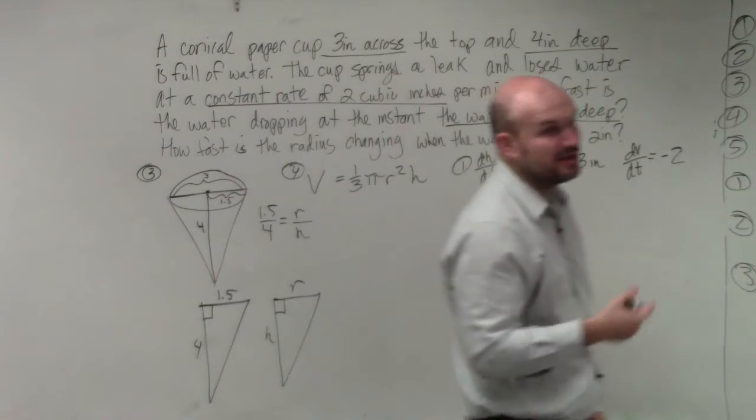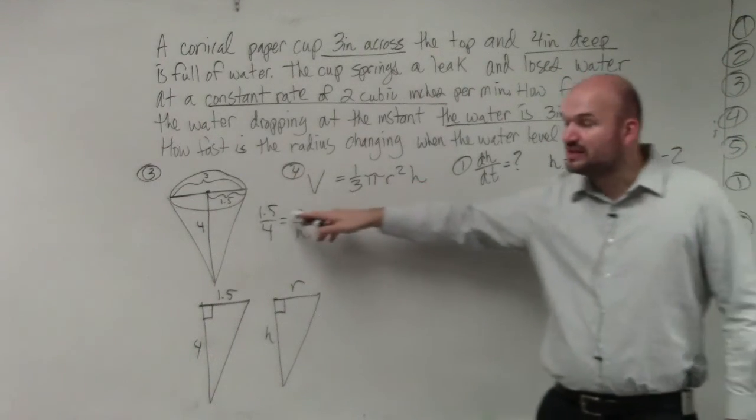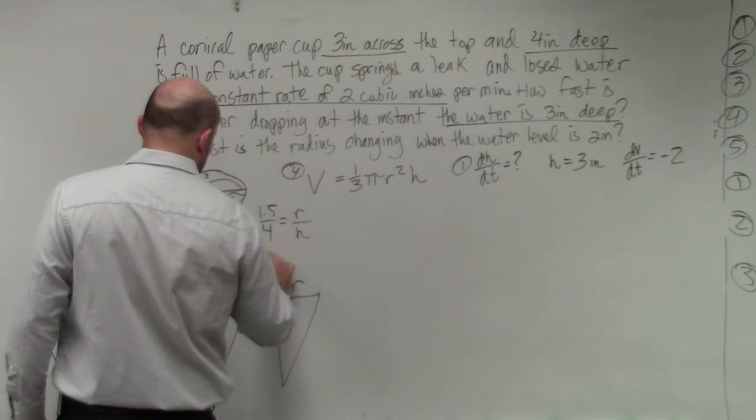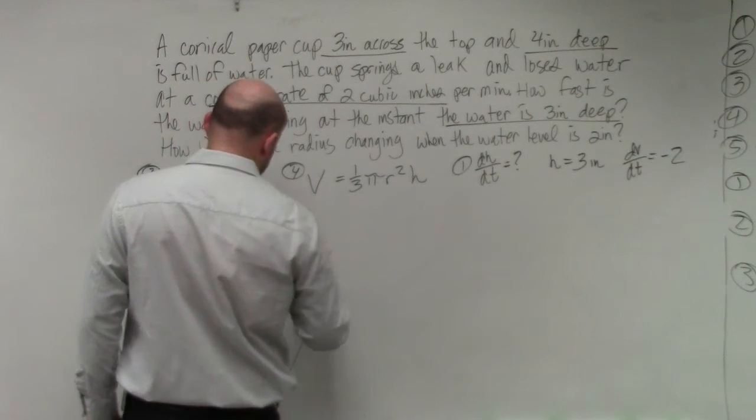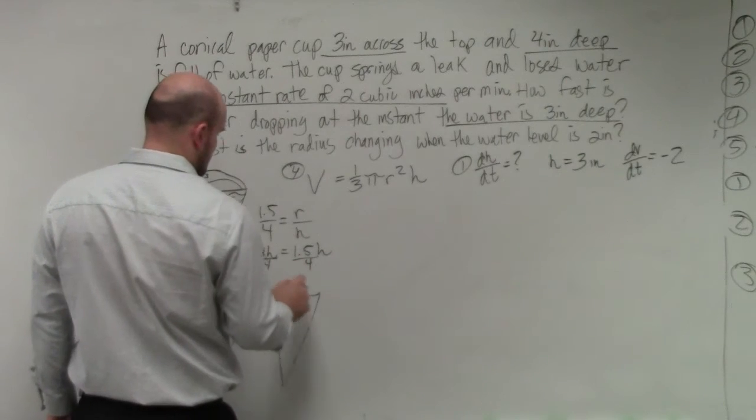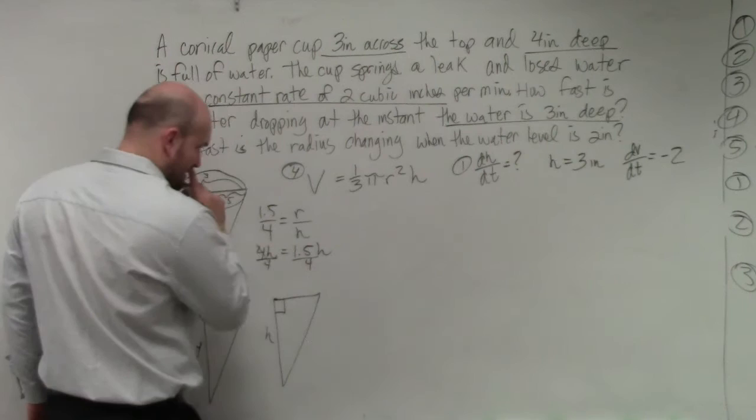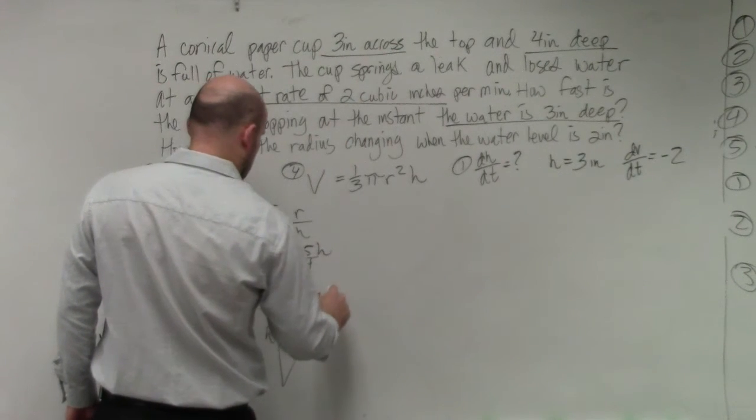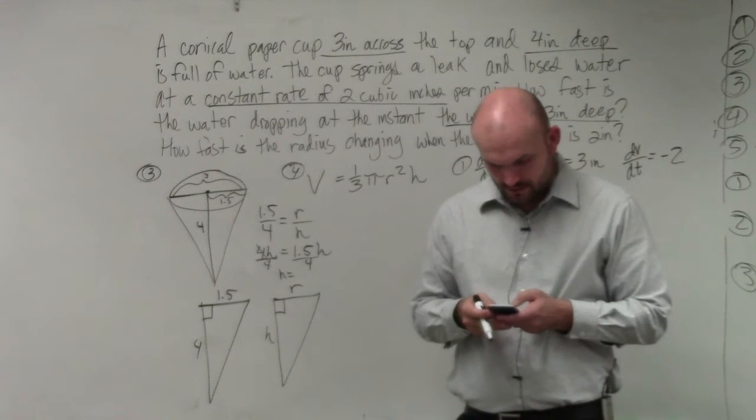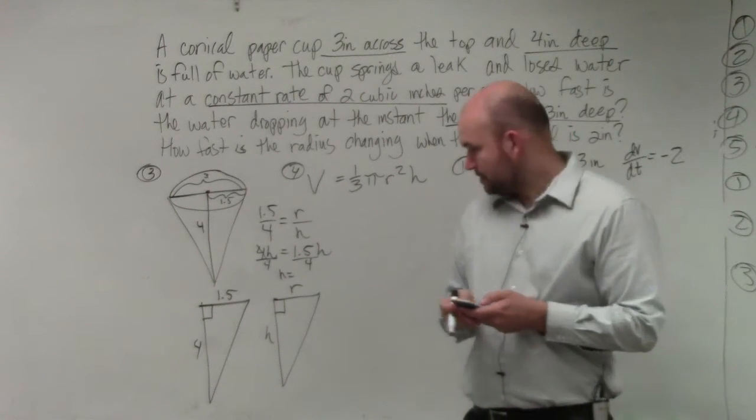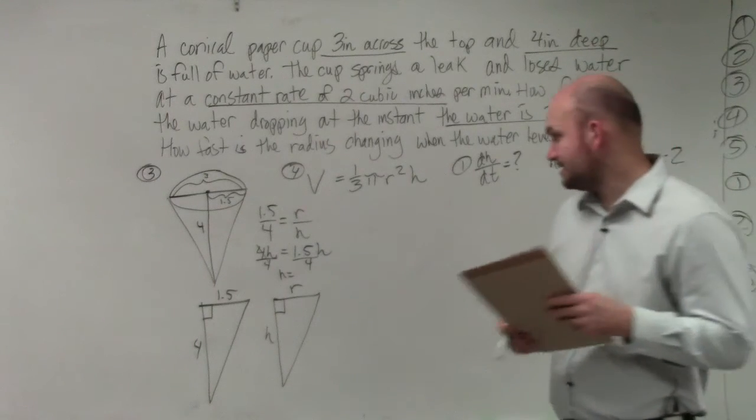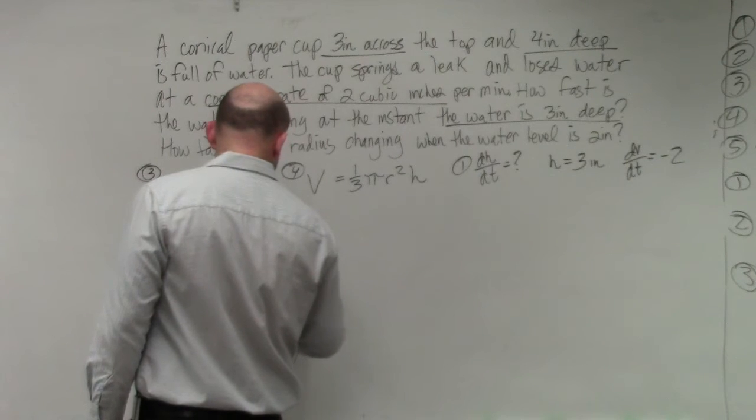And now what we're going to want to do is we're going to find out what r is equal to. Because then what we can do is if we can replace r in terms of h, then we can eliminate having to deal with r. So just do a little cross-multiply, even though I hate cross-multiply. And you can now say 1.5 divided by 4. We want to solve for r. Thank you.